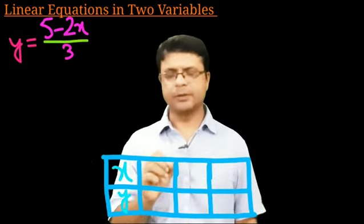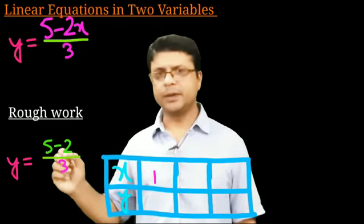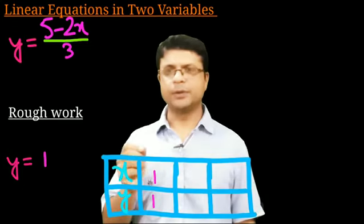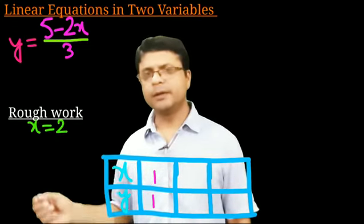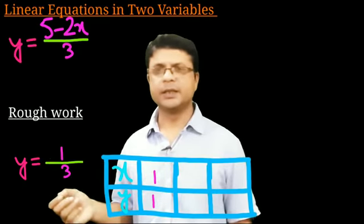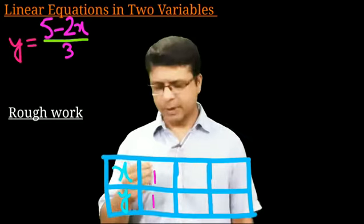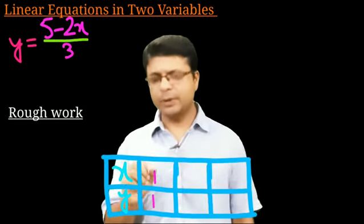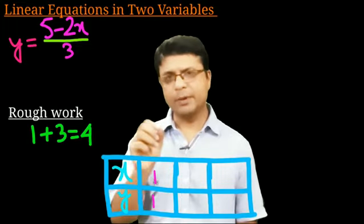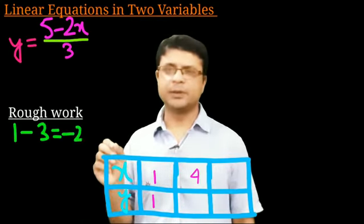If x = 1, then y = (5 − 2) / 3 = 3/3 = 1. Now the trick: to avoid fractions, take the next x-value by adding the denominator. The denominator is 3, so 1 + 3 = 4 is the second value of x. For the third value, subtract the denominator: 1 − 3 = −2. This ensures y remains an integer each time.